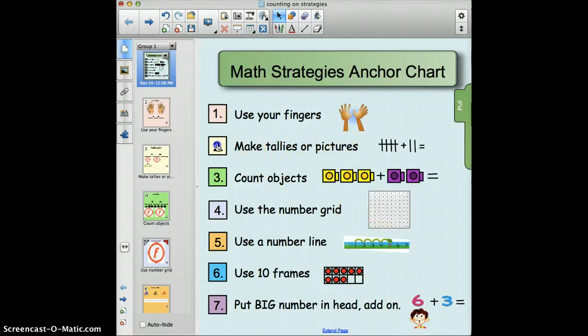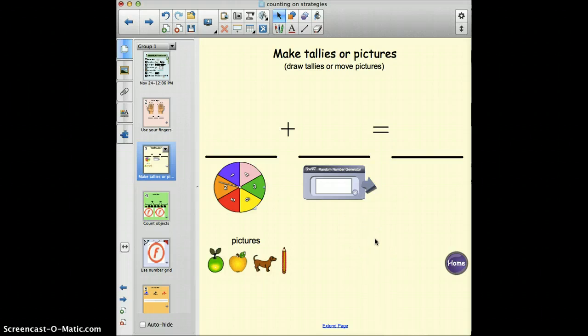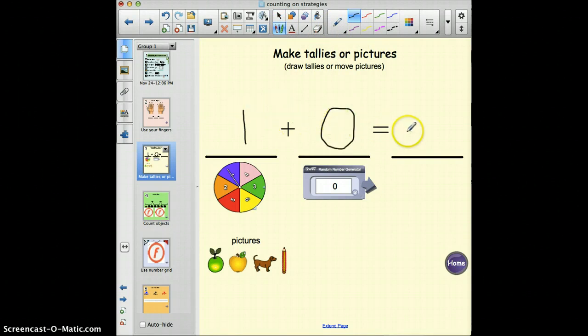Next one is make tallies or pictures. I gave the students an independent work problem they could do by themselves or with a partner. If a student gets finished early, they can go back and do this using the smart board. They get to use the spinner and that creates their number. So you get number one, so they can write in the number one. Then you click this number and they gave you a random number, it's zero. So one plus zero equals one and they would figure it out using tallies - one tally plus zero tallies equals one tally which equals one.